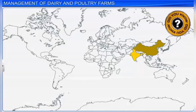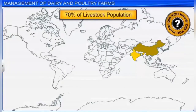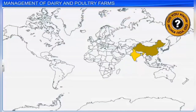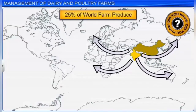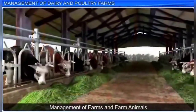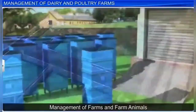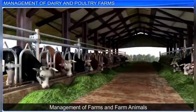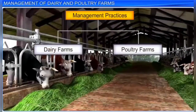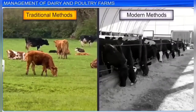India and China together contribute more than 70% of the world's livestock population. However, as productivity is very low, their contribution to world farm produce is a mere 25%. To increase the overall quality and productivity of animal produce, strategies and techniques to enhance food production need to be initiated along with proper management of farms and farm animals.